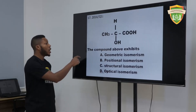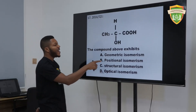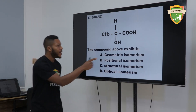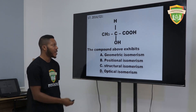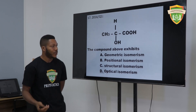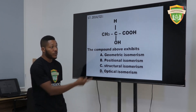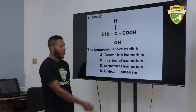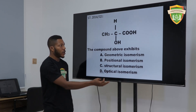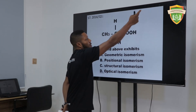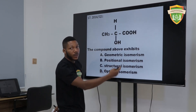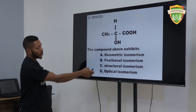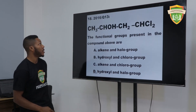The compound above exhibits — we talk of different types of isomerism. We have geometric — no, this is not geometric. This is not positional. This is not structural. But optical, because you can rotate it. You place a mirror here, it will be upside down. So the actual answer is optical isomerism.